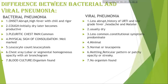Cough in bacterial pneumonia is initially dry, later becomes productive. In viral pneumonia, it is usually dry. Pleuritic chest pain is common in bacterial pneumonia but less common in viral pneumonia, where constitutional symptoms may predominate. Physical signs of consolidation are well-marked in bacterial pneumonia but minimal in viral. Leukocytes show leukocytosis in bacterial pneumonia (except atypical pneumonia), whereas in viral pneumonia the count is normal or shows leukopenia.